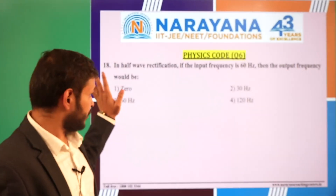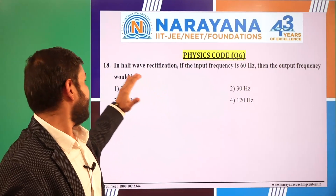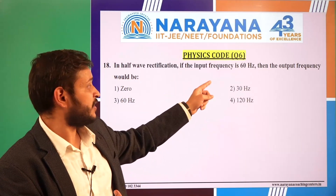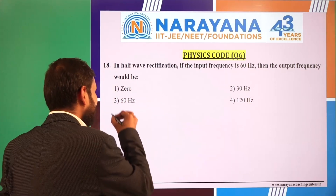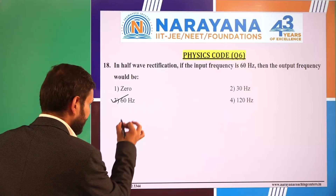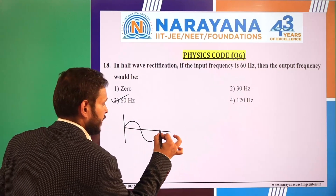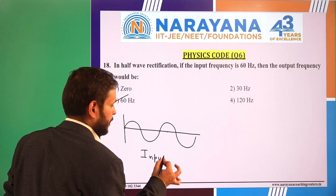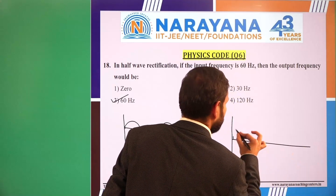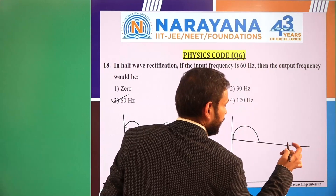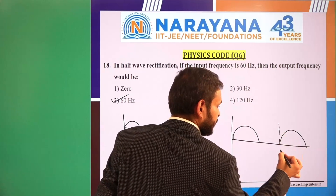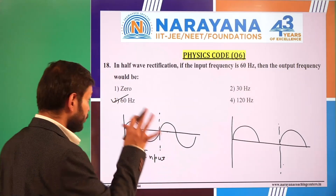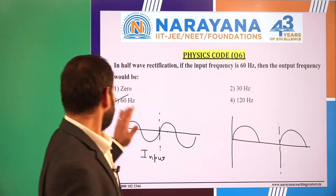Question 18 is from semiconductors — diodes and half-wave rectifier. In a half-wave rectification, if the input frequency is 60 Hz, what is the output frequency? The answer is 60 Hz only. In a half-wave rectifier, only half the wave is rectified, but the time period remains the same because the pattern still repeats at the original interval. Since time period doesn't change, frequency doesn't change. Option 3 is correct.